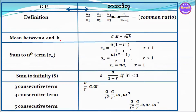Now we can find the mean between A and B. The Arithmetic Mean AM between A and B is A plus B divided by 2. The Geometric Mean GM is the square root of A times B. So AM equals (A+B)/2 and GM equals √(AB).